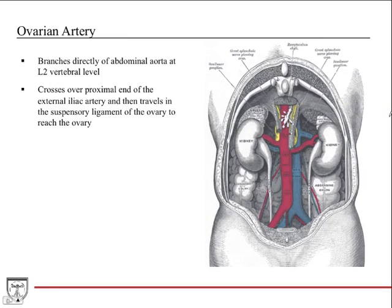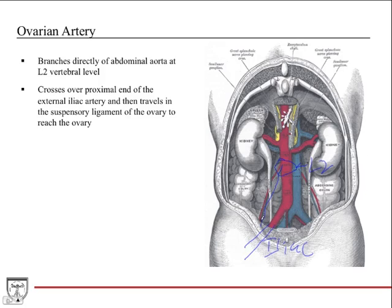The ovarian artery is important to discuss because it actually originates in the abdomen. It branches directly off the abdominal aorta at the level of the L2 vertebra. You can see it traveling off here and going down. It crosses over the proximal end of the external iliac, and then travels in the suspensory ligament of the ovary. It drapes over the iliac and then joins that suspensory ligament to reach the ovary.